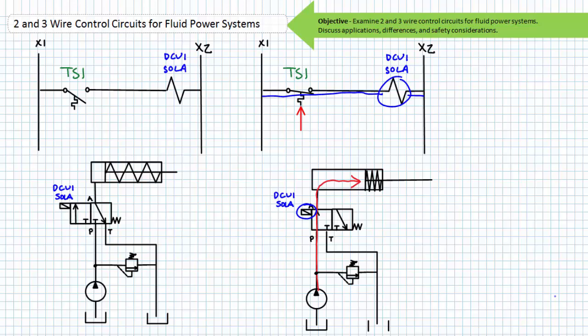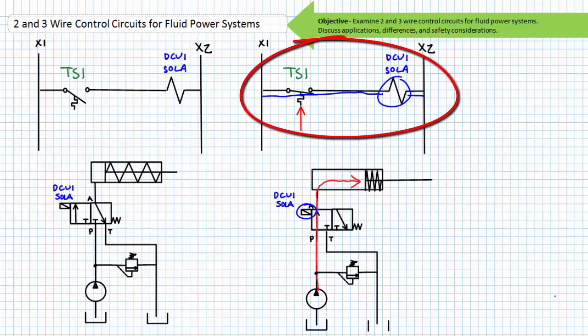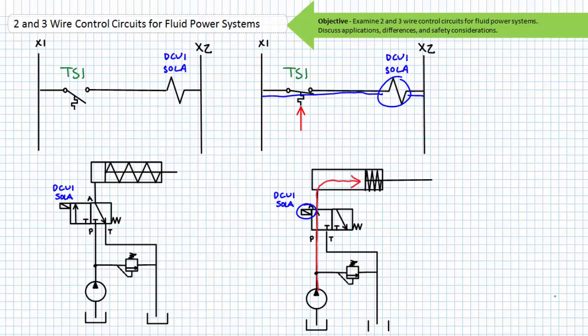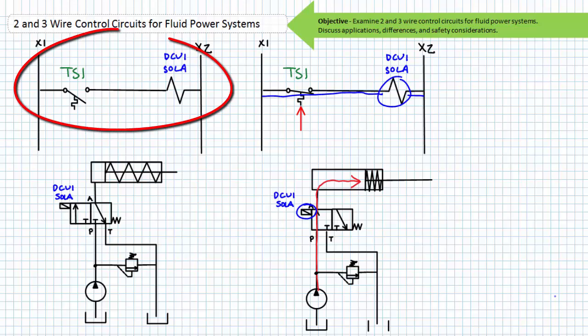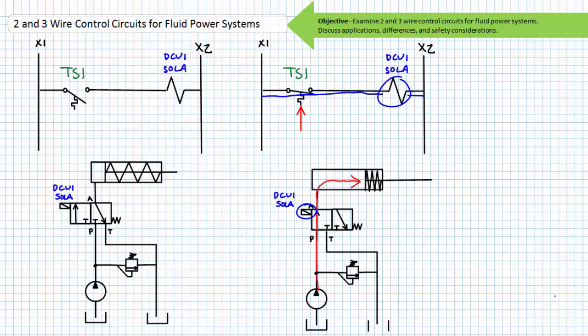When temperature rises to the predetermined setpoint, the normally open temperature switch closes. Via the now closed temperature switch, DCV1 Sol A is energized. The energized solenoid shifts DCV1 to the straight through position when the single acting cylinder extends, opening up the exhaust vent. After a sufficient quantity of hot air has been exhausted, temperature in the conditioned space drops and the temperature switch reaches its reset value and reopens. DCV1 Sol A is de-energized and DCV1 shifts to the cross-connect position. The spring retracted, single acting cylinder retracts and the exhaust vent closes.